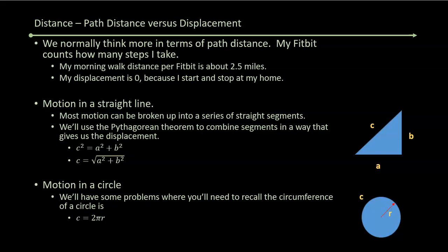We're just going to do motion in a straight line until we get to projectile motion. But most motion can be broken up into segments that are straight. We'll use the Pythagorean theorem when the segments take different directions. You recall the Pythagorean theorem. You've got a triangle, side A, side B. Side C is given by C squared is A squared plus B squared. You'll also need to recall the circumference of a circle. You've got a circle of radius R. The circumference C is 2 times pi times R.